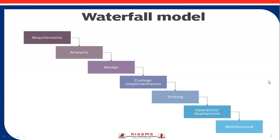The next is the deployment or operation phase. After successful testing, the application is transferred to production. Production and deployment is done by the developer. Once the customer starts using the developed system, actual problems will come up that need to be solved from time to time. In this phase, mostly testers, developers, customers, the business team, architects, and the product manager or delivery manager are involved.